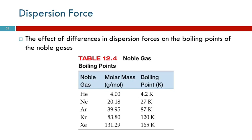Think about Red Rover: a group of kindergartners versus the linemen of the Fresno City College football team. Which line is harder to break through? The football players, because their grip is stronger. To break through you have to run a lot faster. So in order for a liquid to boil, you have to have enough energy — the person has to be running fast enough to break through. If the forces are strong, the boiling point will be higher. High boiling point equals strong intermolecular forces; low boiling point equals weak intermolecular forces.